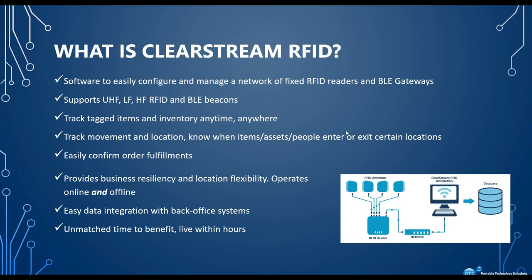ClearStream RFID is a middleware that allows you to easily set up fixed RFID readers and BLE gateways to back-end systems with no programming involved — you're really just mapping devices on your network to a pre-existing system. When you start them up, they start scanning for RFID tags or BLE beacons and sending that data to your back-end. It can be set up to track any type of tagged items through RFID or BLE, tracking movement and location of assets. It's a horizontal application where you can configure it for anything you need, and it can latch on to your pre-existing system — no programming, so you can get up and running quickly.